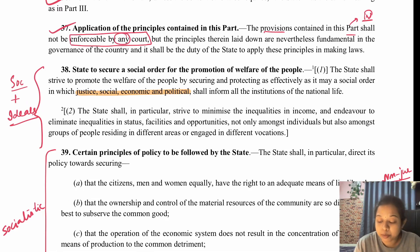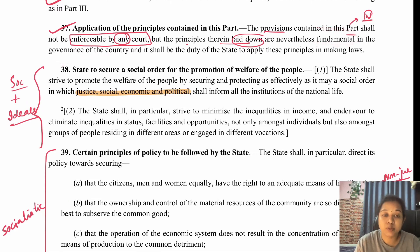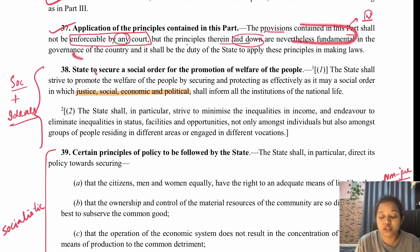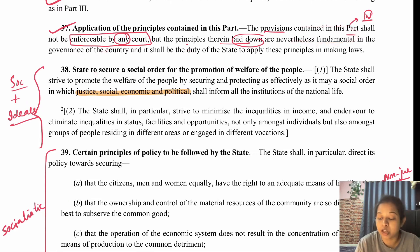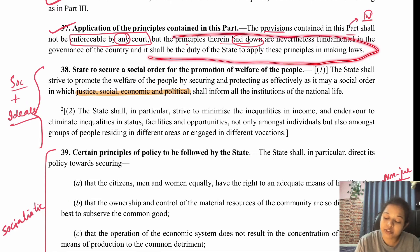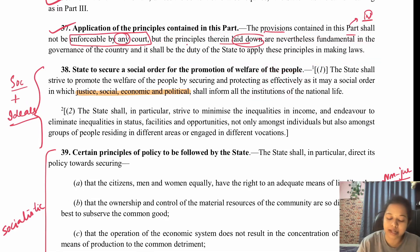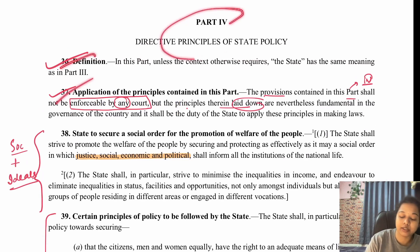However, Article 37 also says that the principles laid down here are fundamental in the governance of the country. This means that even if we cannot forcibly implement them, they are very important for governments and states, and it is the duty of the state to apply these principles in law making. The significance of this line will become clearer when we discuss the utility of the directive principles. We are now done with all the articles of this part.